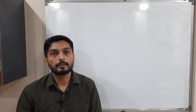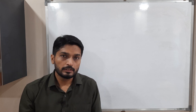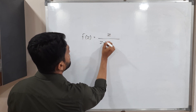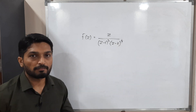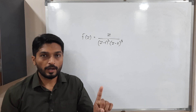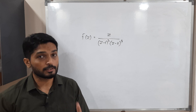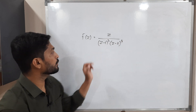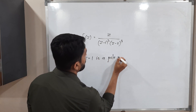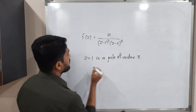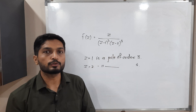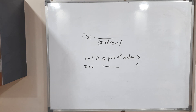For simple functions, you can find the order just by observation. For example, f(z) equals z divided by (z minus 1)-cubed times (z minus 2) to the 4. You can see z equals 1 is a singular point with the bracket raised to power 3, so it is a pole of order 3. And z equals 2 is a singular point with the bracket raised to power 4, so it is a pole of order 4. When you have simple functions, just observing the power of the bracket gives you the order of the pole.